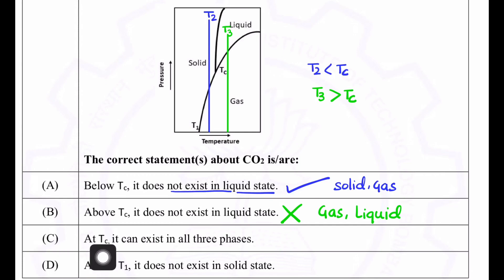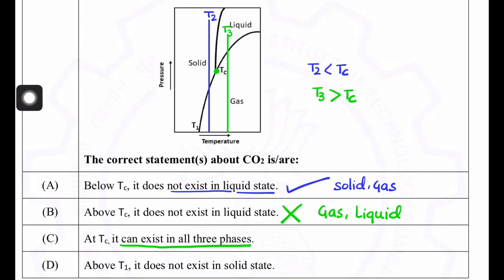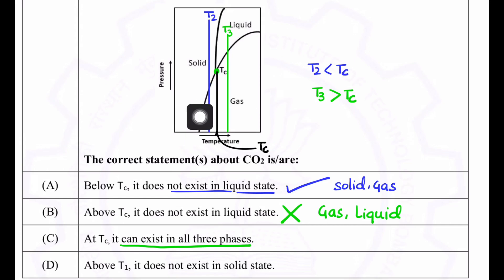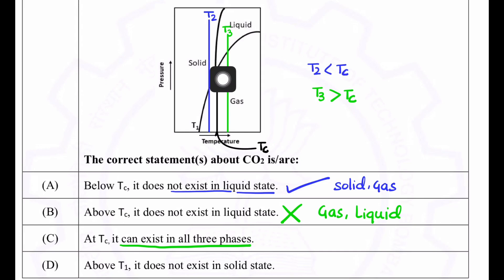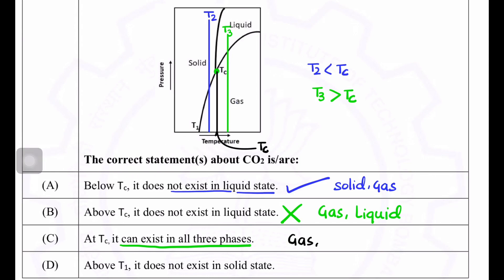Option C: at Tc, the triple point, liquid, solid, and gas all coexist in thermodynamic equilibrium. This is correct because at the triple point, the sublimation curve (solid to gas), the vaporization curve (liquid to gas), and the fusion curve (solid to liquid) all meet at this single point. So all three phases coexist — option C is correct.